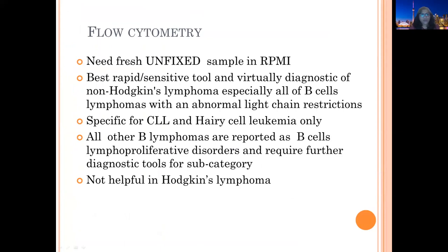Flow cytometry is one of the best rapid and sensitive tools for lymphoma diagnosis. Fresh, unfixed tissue is needed; the sample should go in RPMI. Majority of B-cell lymphomas can be diagnosed with flow cytometry. It is specific for CLL and hairy cell leukemia; all other B lymphomas are reported as B-cell lymphoproliferative disorder requiring further diagnostic tools for subcategorization. Flow cytometry is not helpful in Hodgkin lymphoma because the diagnostic cells — CD15 and CD30 positive Reed-Sternberg cells — are not picked up by the flow cytometry technique.